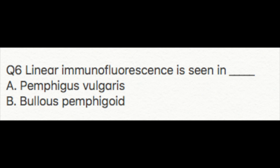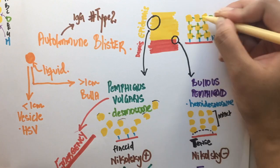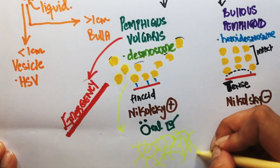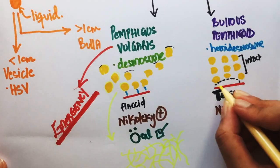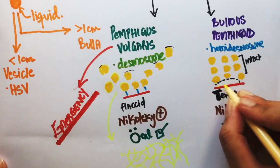Question six: linear immunofluorescence is seen in which condition? In pemphigus vulgaris, the affected cells are all over the place, so immunofluorescence will show a reticular, net-like pattern. In bullous pemphigoid, the affected cells are confined to the basement membrane area, so immunofluorescence will be linear. The answer is bullous pemphigoid.